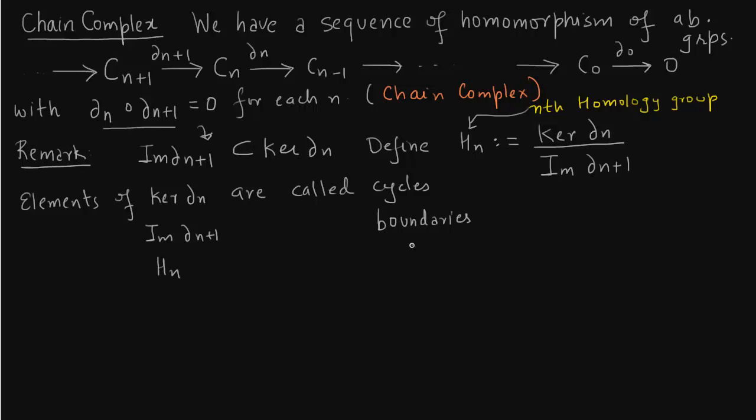And elements of this nth homology group H_n are called homology classes. So you see that I have done nothing. We have just as in algebra taken cosets of image of delta_n+1. So think of it as ring over its ideal. So two cycles in the same class are called homologous if their difference is a boundary.